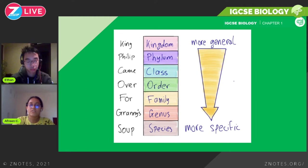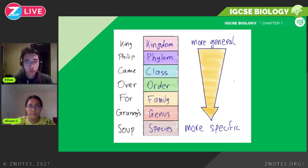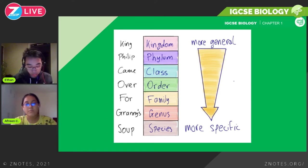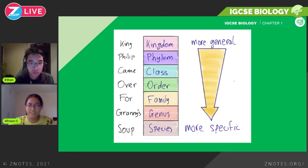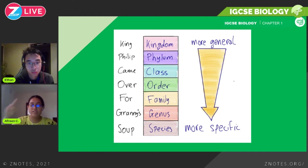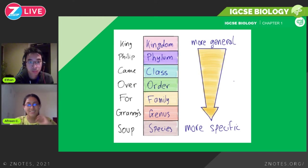The classification system looks like a funnel — the top is more general and it gets more specific as you go down. The levels are: kingdom, phylum, class, order, family, genus, and species. For the IGCSE you'll mainly focus on kingdom, phylum, genus, and species; class, order, and family are less emphasised. A helpful mnemonic to remember the order is 'King Philip Came Over For Granny's Soup.'